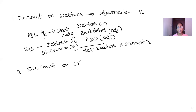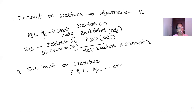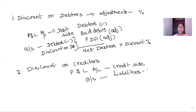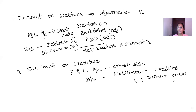Discount on creditors: creditors are those to whom we owe money. When creditors allow us a discount, it marks an income to us. So this discount on creditors is credited to the P&L account. In the balance sheet, this discount is subtracted from the total creditors on the liability side, showing that we need not pay this discount amount — the net figure is shown as the liability.